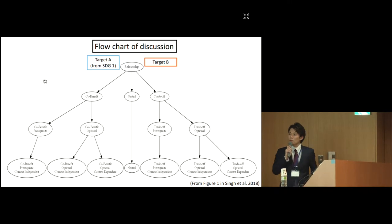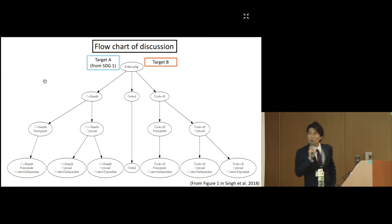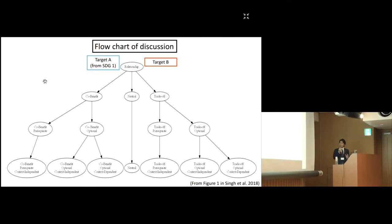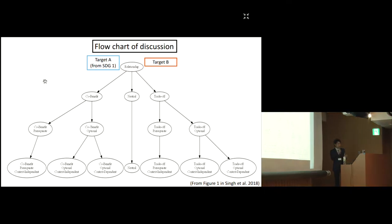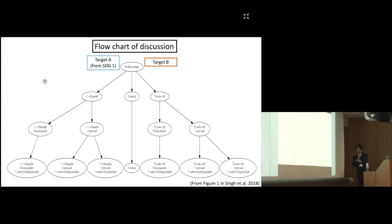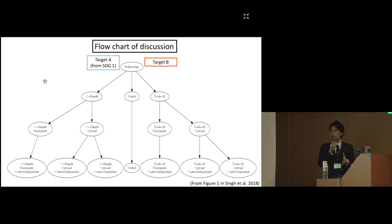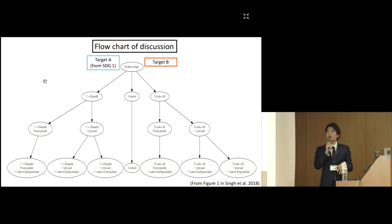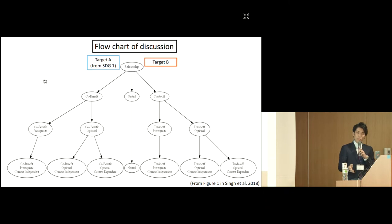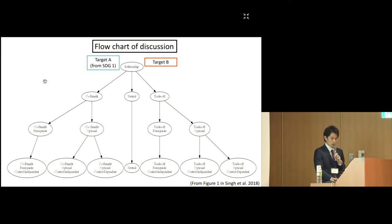First, this is the figure from the recent work, Sin et al. 2018. In the discussion session, we'd like to talk about the relationship between the targets of SDG1 and some other targets. The actual procedure of the discussion proposed by Sin et al. 2018 is composed of a three-step discussion process, but this time, because of the time limitation, we'd like to focus only on the first step of the discussion procedure.